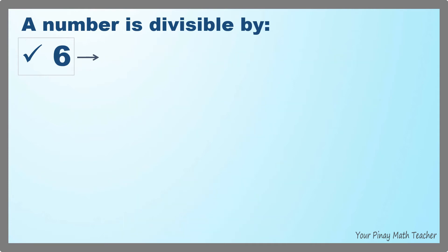At this time, let's have the divisibility rule for 6. A number is divisible by 6 if it is divisible by both 2 and 3.